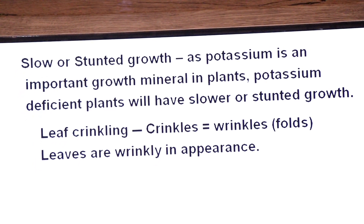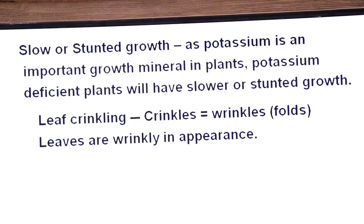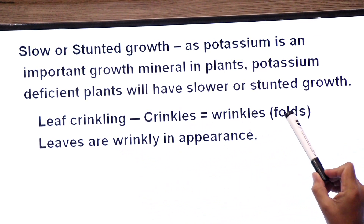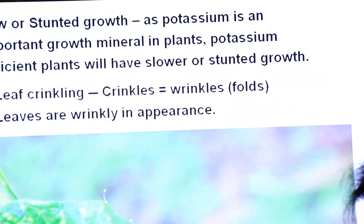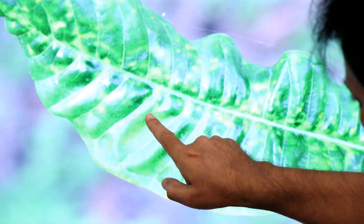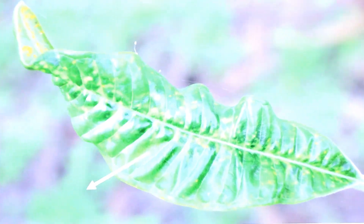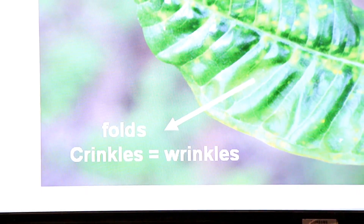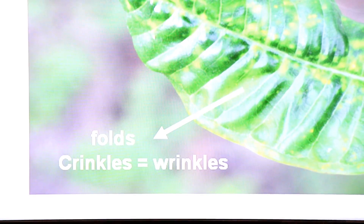Stunted growth occurs, and dear students, leaves develop folds and wrinkles. This is called leaf crinkling. Crinkles means wrinkles or folds, and leaves appear wrinkled. You can see in the photograph that the leaf has visible folds and wrinkles — these folds are called crinkles. Leaves show curling and crinkling due to deficiency of potassium ions.